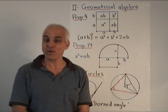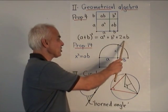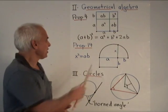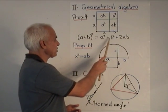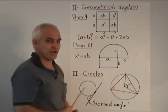Book two deals with what we would call geometrical algebra, with algebraic relations like this, which in Euclid's time were expressed geometrically. So A plus B all squared equals A squared plus B squared plus 2AB was represented by a geometrical figure like this.